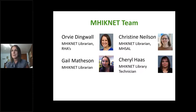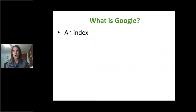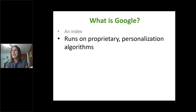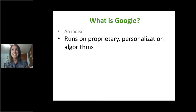On to Google: what is Google? Google is an index — when you search it, it points you to different references where you can dive deeper to find answers. It runs on proprietary software with personalized algorithms, which means it's constantly changing. They're always tweaking how Google works.